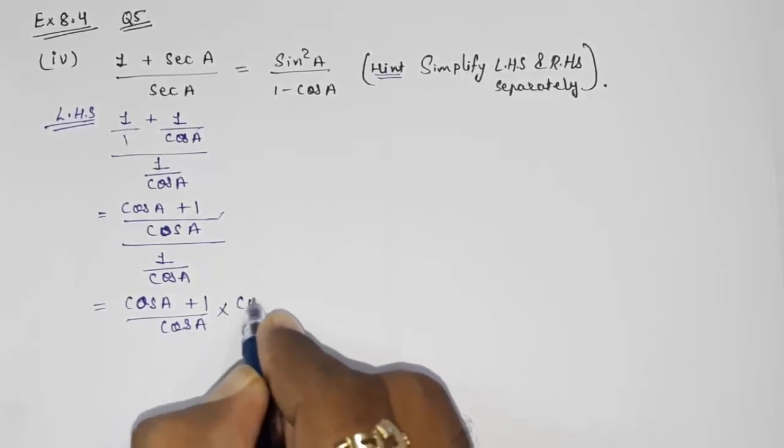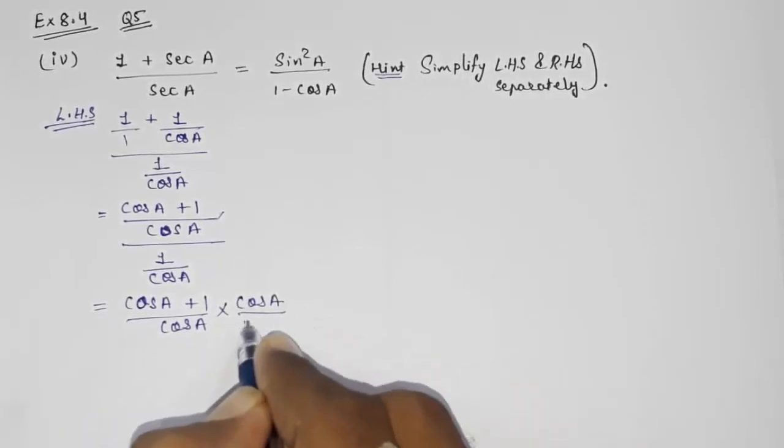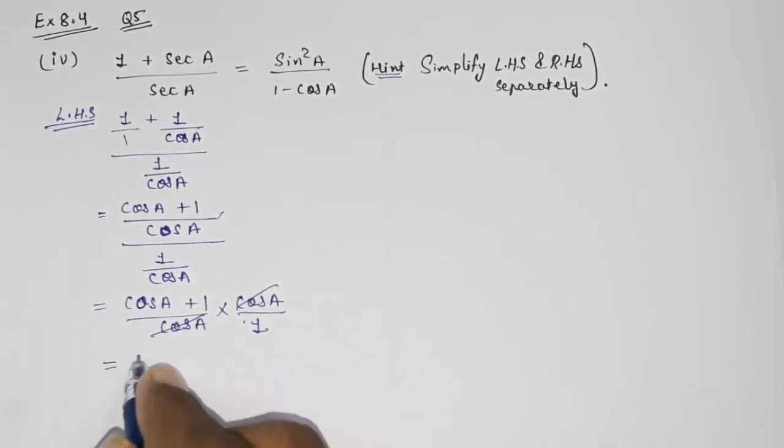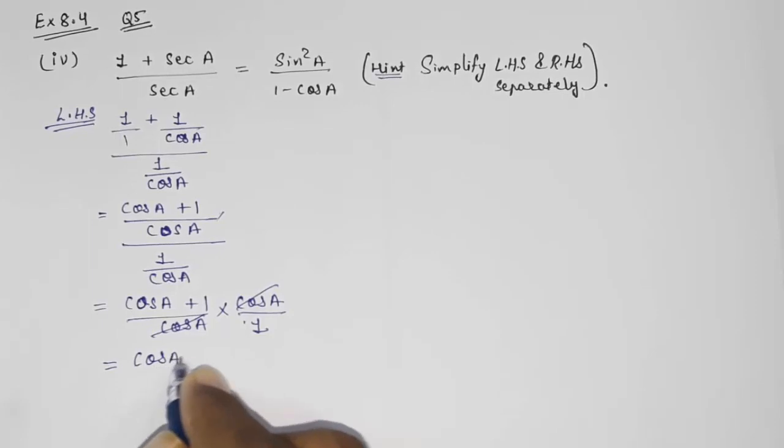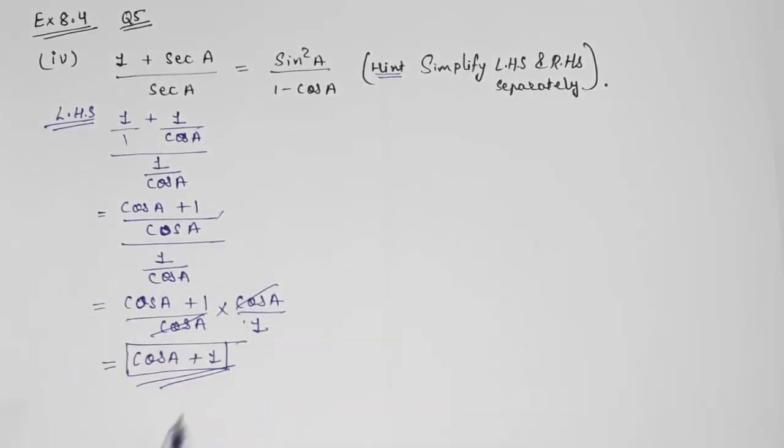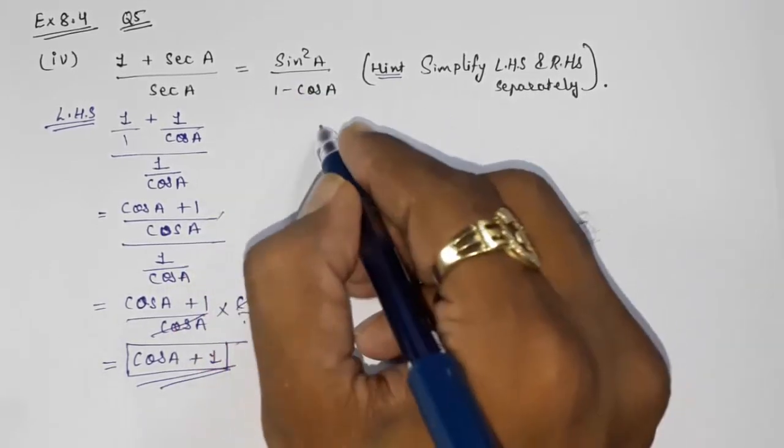So this cos A, cos A in base will get cancelled and I got LHS cos A plus 1, or 1 plus 1. Now this is our LHS answer. Now we have to solve RHS also.